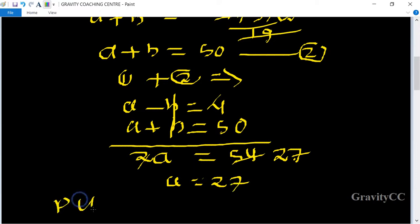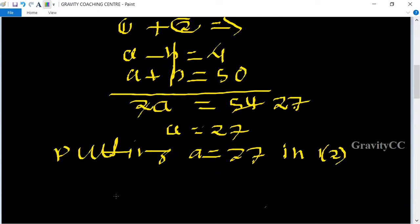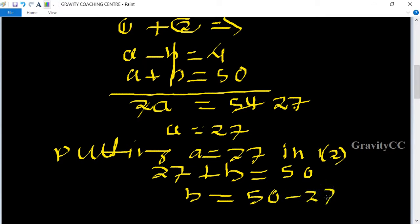Putting a equal to 27 in equation second, we get 27 plus b equal to 50. So b equal to 50 minus 27, so b equal to 23 centimeter.